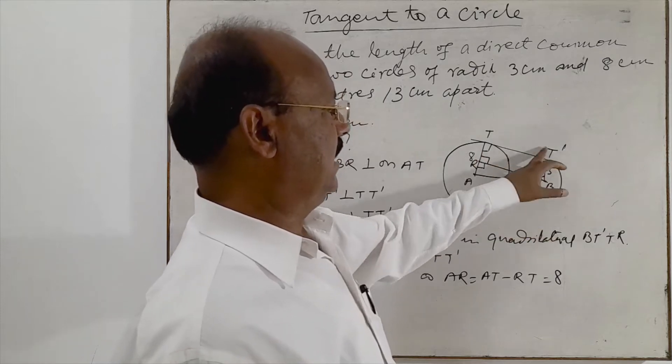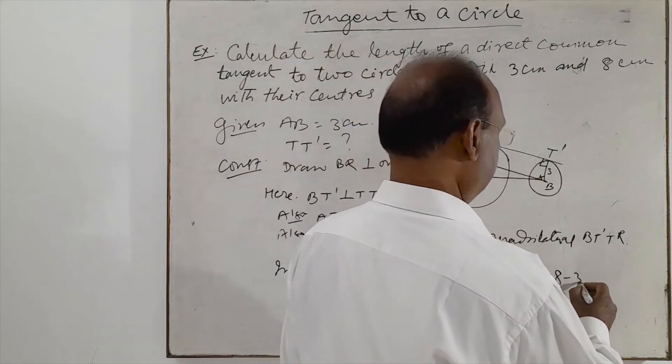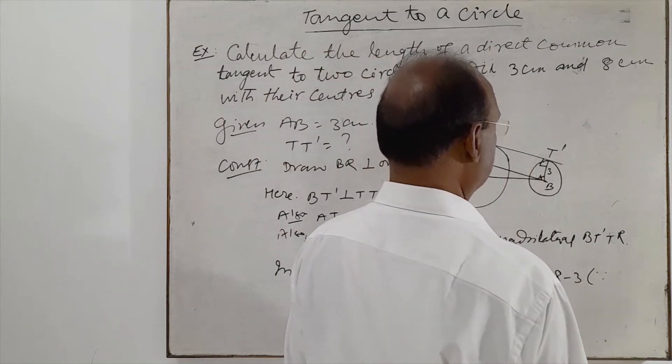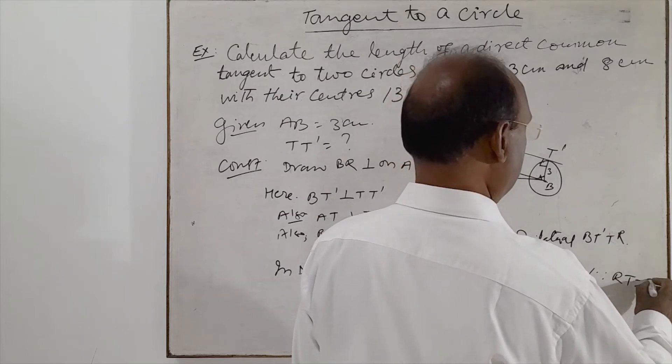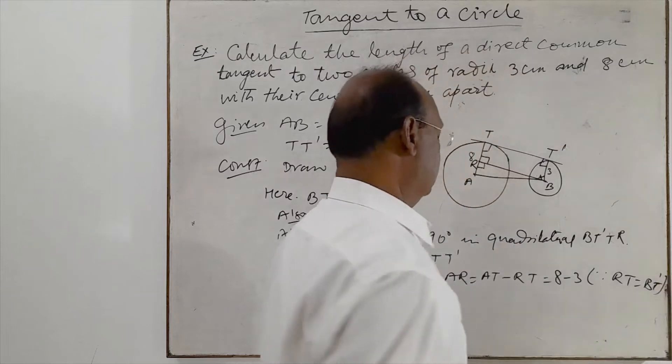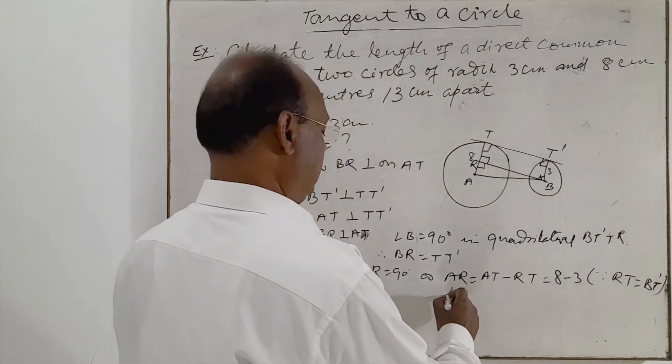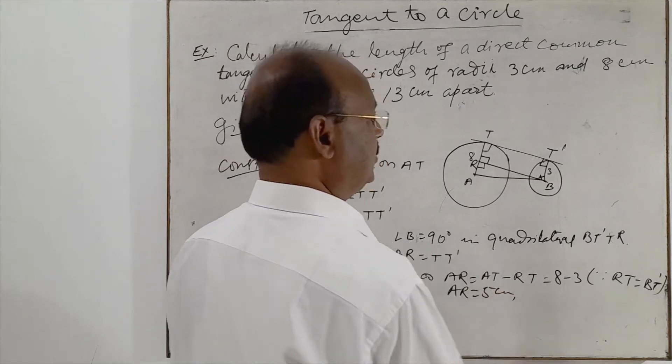RT will be equal to BT', opposite sides of a rectangle. So BT' is 3 cm, so RT will be also 3 cm. Why? Since RT is equal to BT', opposite sides of a rectangle. So we are getting here AR is equal to 8 minus 3 is equal to 5 cm.